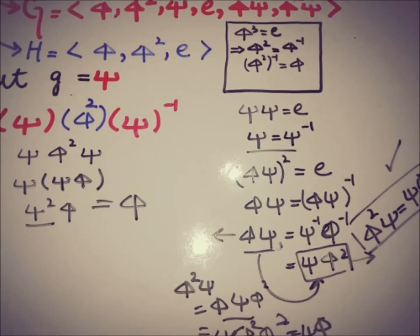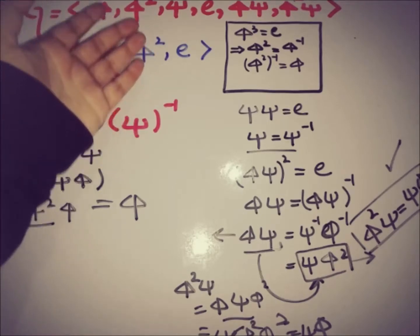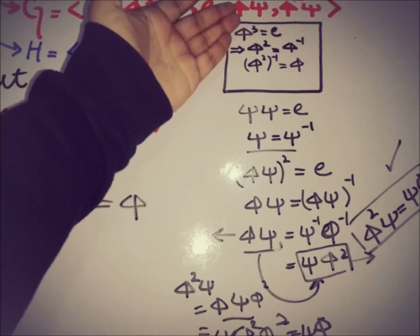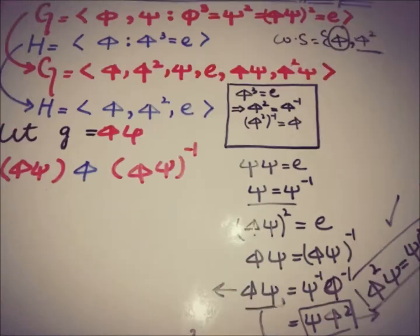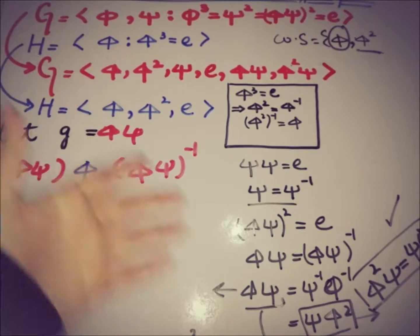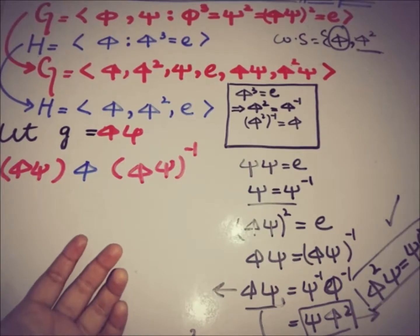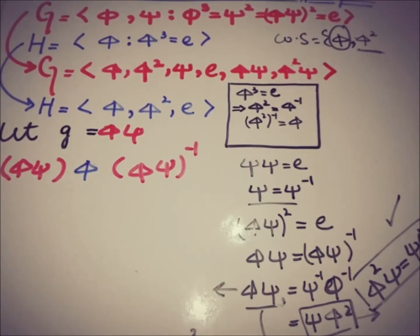We don't need to check identity, and the remaining elements are φψ and φ²ψ — that is left as a task for you. The hint is that H is indeed a normal subgroup of G, so you can verify that no new elements appear in the conjugate subgroup and that it coincides with H. Stay tuned for more videos, subscribe to the channel, and we'll meet in the next video. Take care, goodbye.